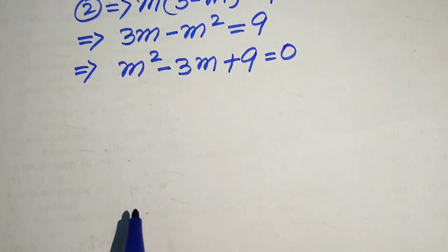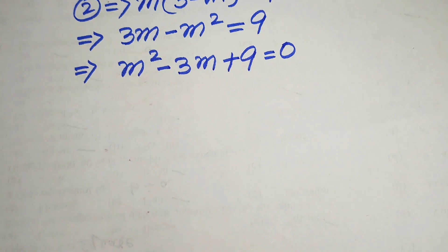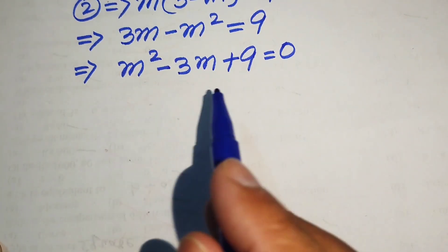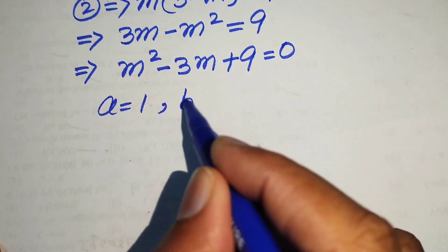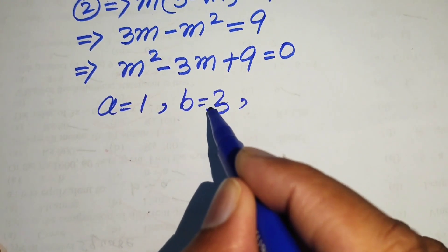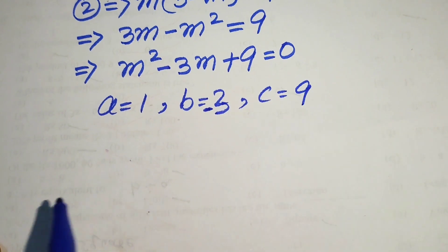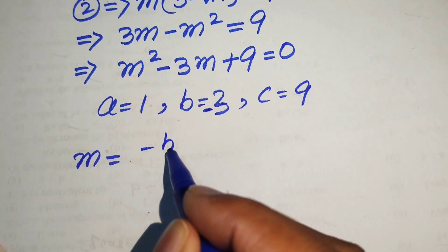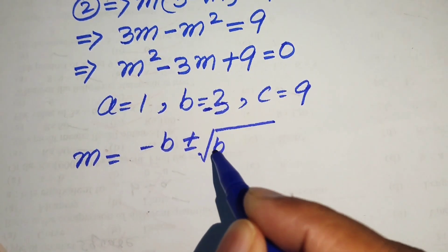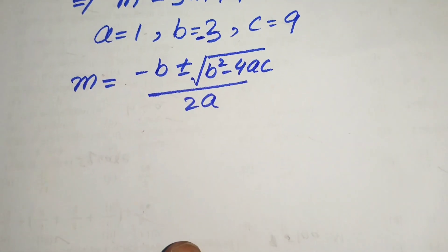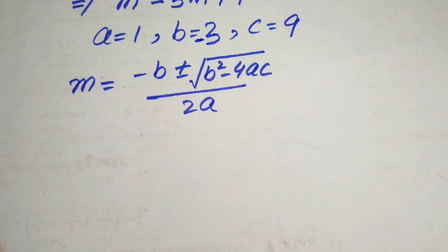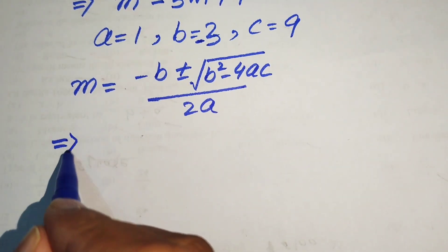We solve this quadratic equation using the quadratic formula. The coefficients are a equals 1, b equals minus 3, and c equals 9. The quadratic formula is m equals minus b plus or minus the square root of b squared minus 4ac, all divided by 2a. We now substitute a, b, and c into this formula.